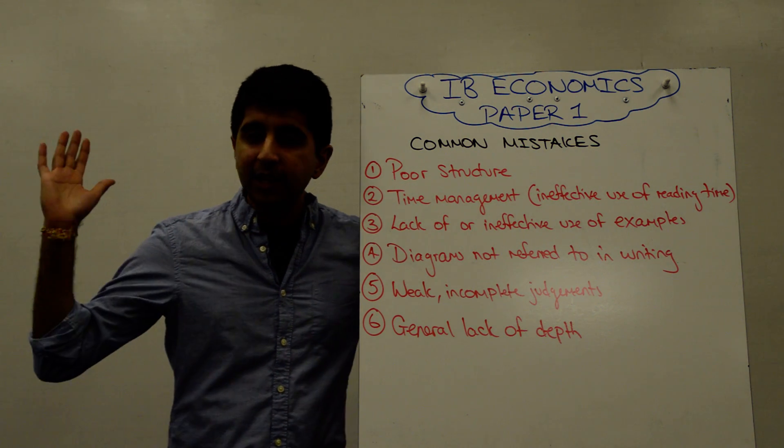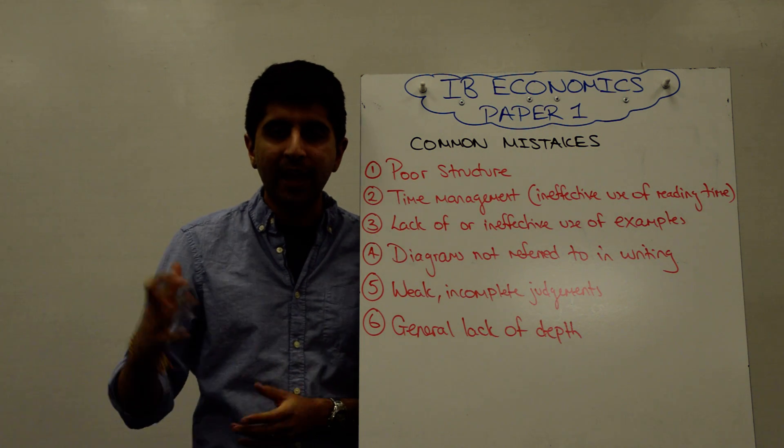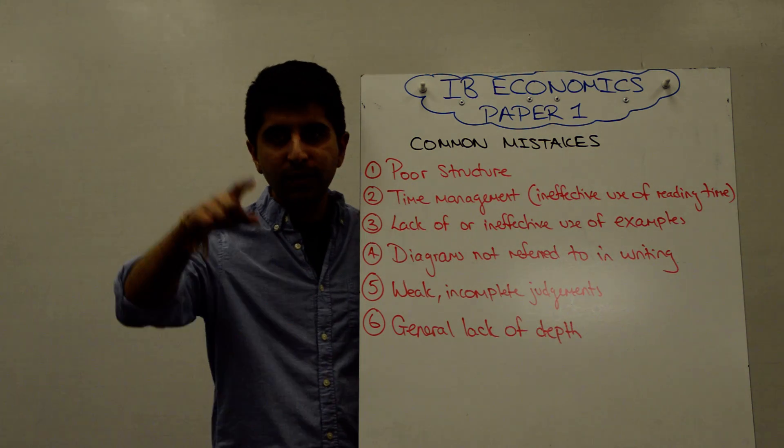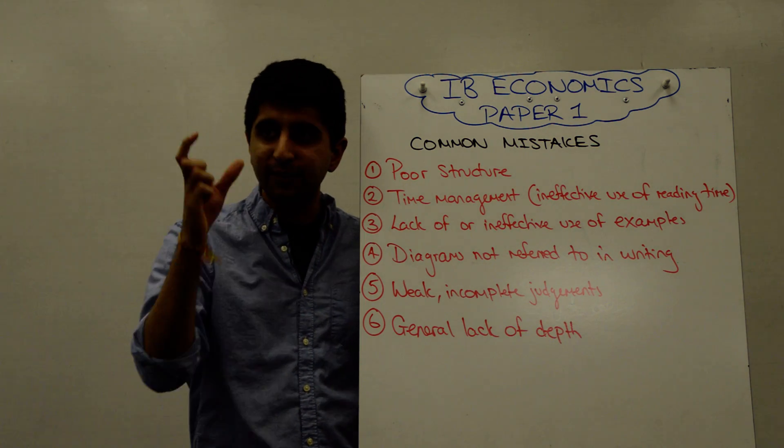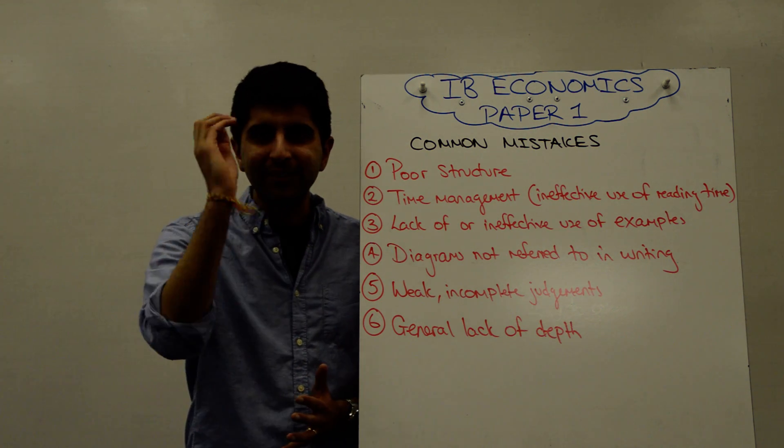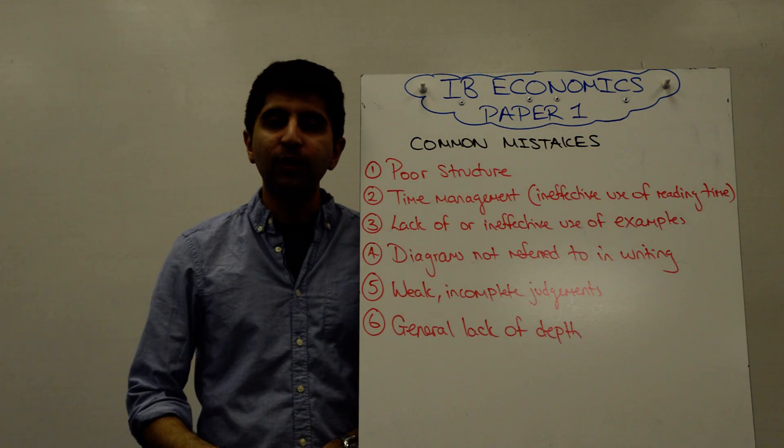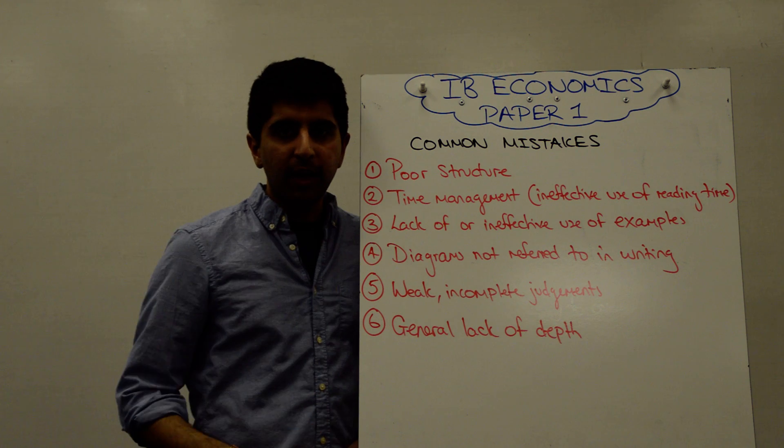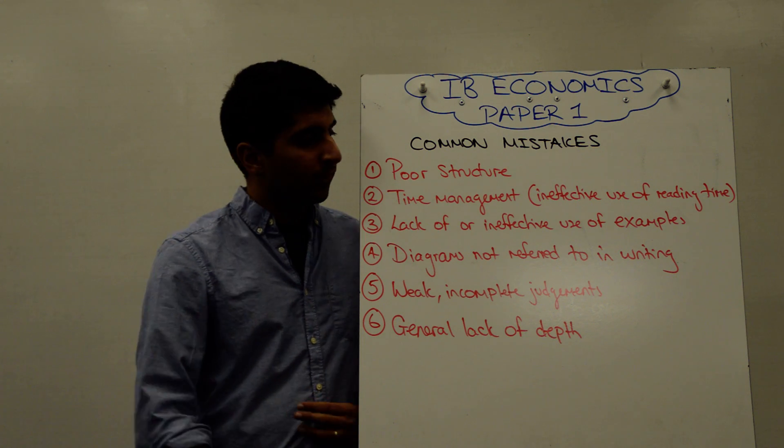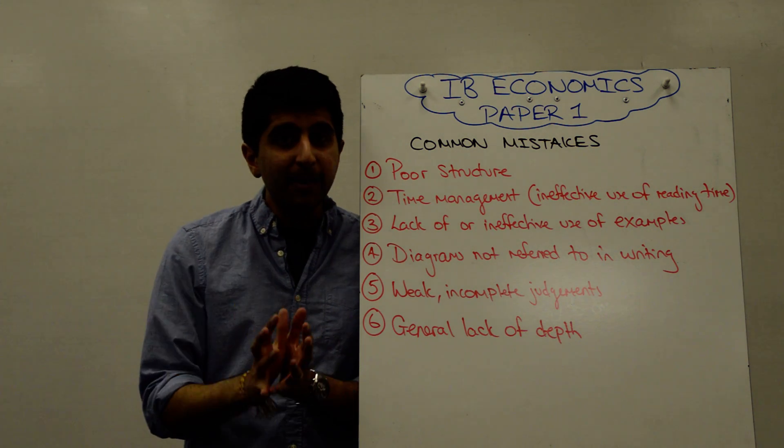Just a general lack of depth. I made a video on how to write in good depth in economics. Make sure you've watched that to understand what the examiner expects. The worst thing in your exam is to have TV next to it, which means 'too vague.' It means the examiner is not sure you understand your economics. Lack of depth will limit the marks you can score. Without good analysis or depth, you won't score more than half marks. These are very common mistakes.